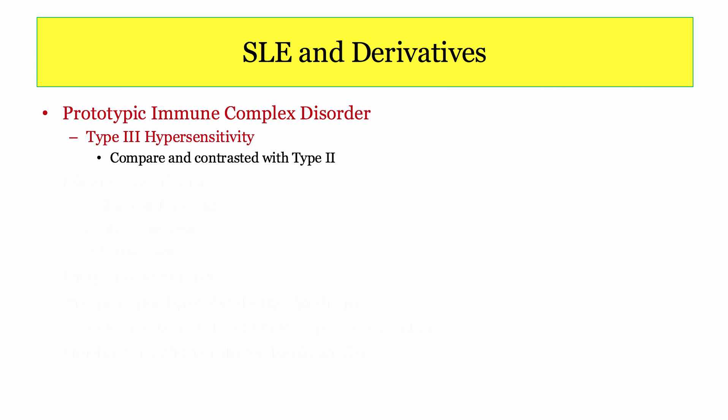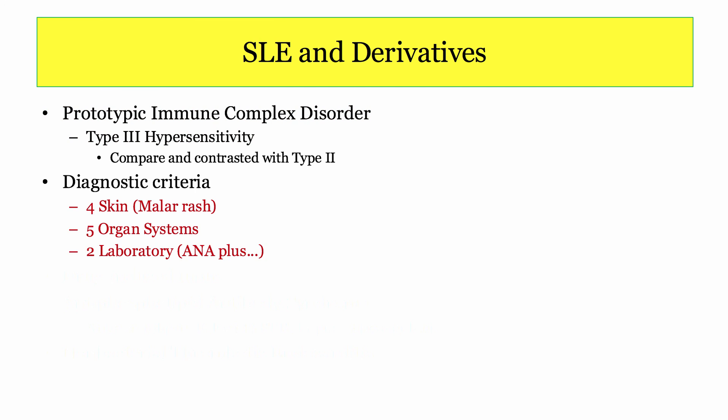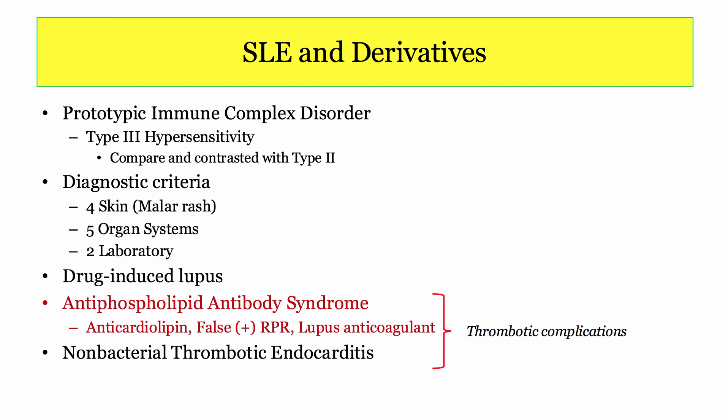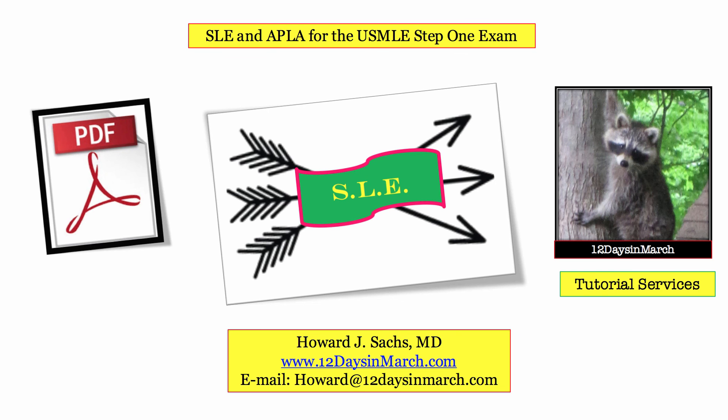In this video we reviewed SLE as the prototypic immune complex disorder, emphasizing type 3 hypersensitivity while comparing and contrasting with type 2 disorders. We reviewed the key diagnostic criteria including 4 skin, 5 organ system, and multiple laboratory manifestations, and emphasized the key derivatives with an emphasis on antiphospholipid antibody syndrome as a rich source of test material. If you have any questions or concerns, please email at 12 Days in March.